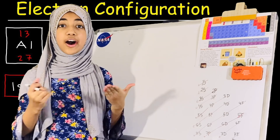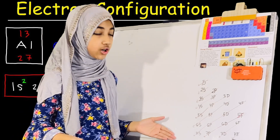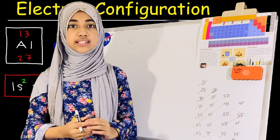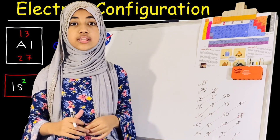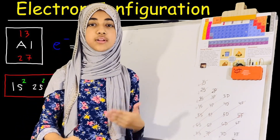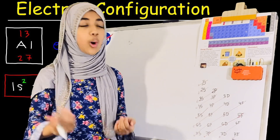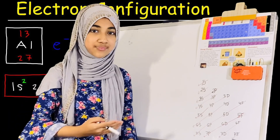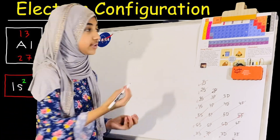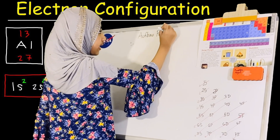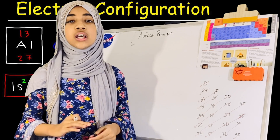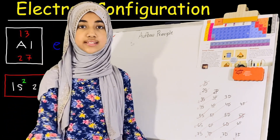Assalamualaikum dear viewers. Today is another chemistry class, as you all might have understood. Today we will be talking about electron configuration. Many of you don't really understand why the electron configuration is the way it is, so today I will try to prove that to you. The electron configuration order is called the Aufbau principle, and to prove it I will be using four quantum numbers, which I will introduce step by step.